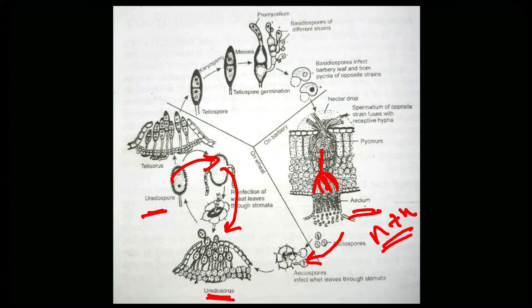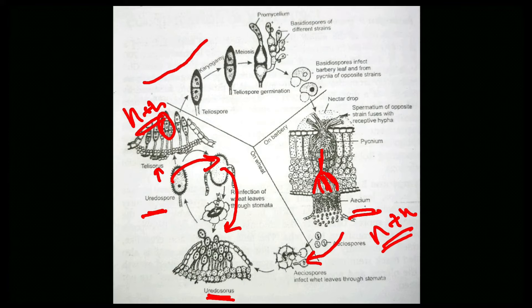As the wheat season ends, uredospores give rise to teliosori producing teliospores (N+N). Karyogamy and meiosis occur and the cycle continues.